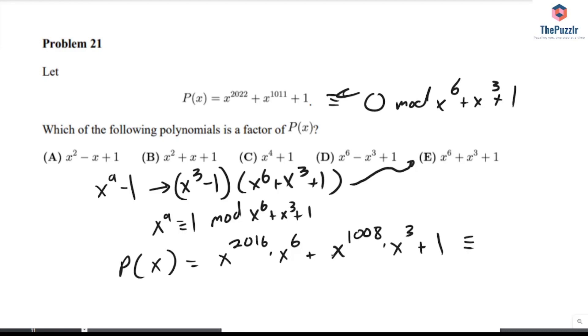We have to find this mod x to the power of 6 plus x cubed plus 1. We'd like to prove that this is 0 in this mod. Well, we know that x to the power of 2016 is a power of 9, so this is just 1 to some power, which is just 1.